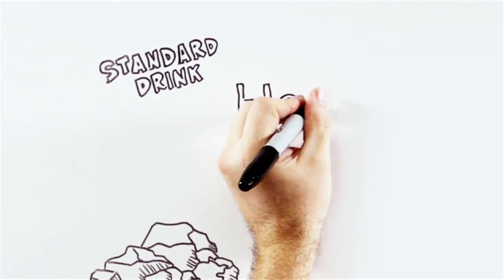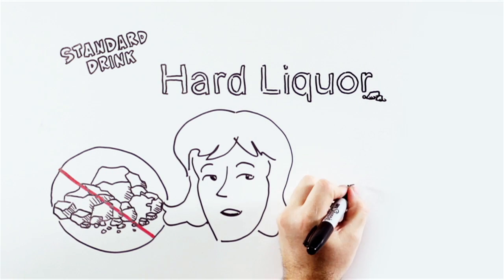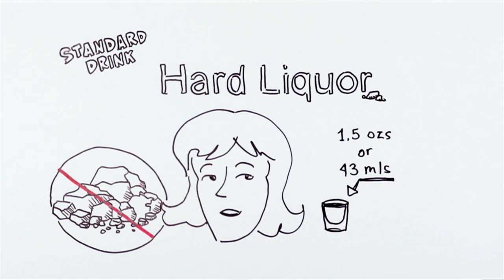So what about the hard stuff? One and a half ounces or 43 milliliters serving size of any hard liquor is one standard drink.